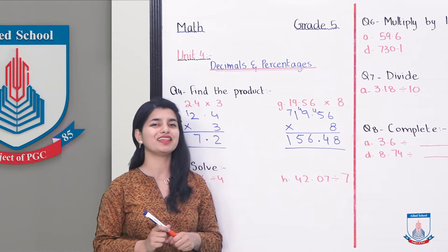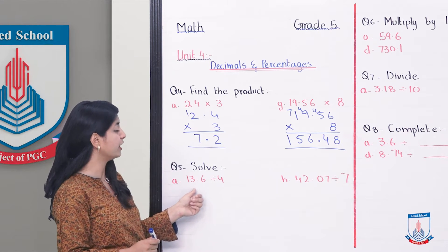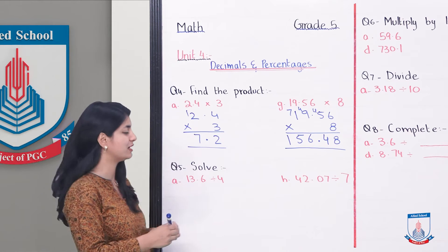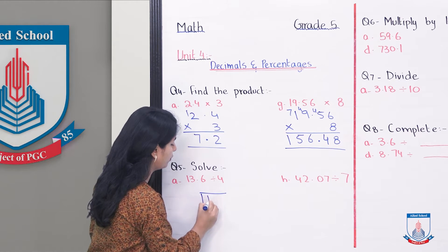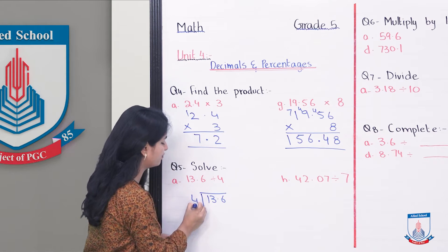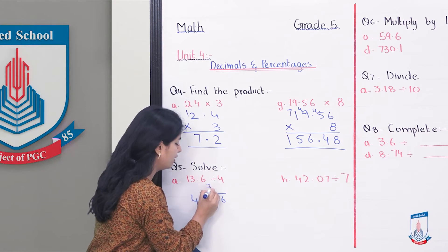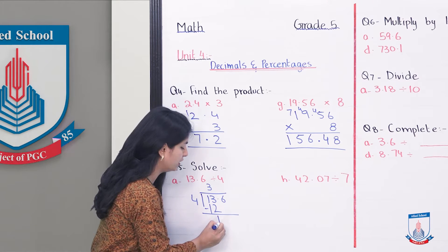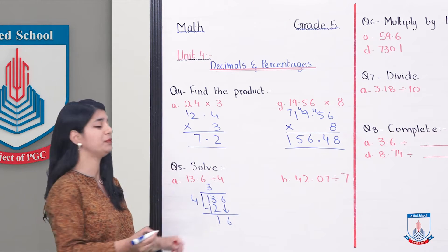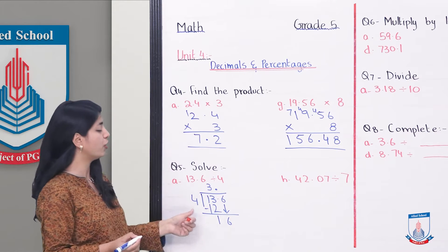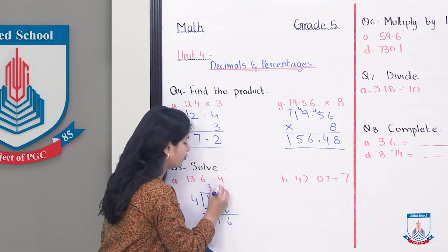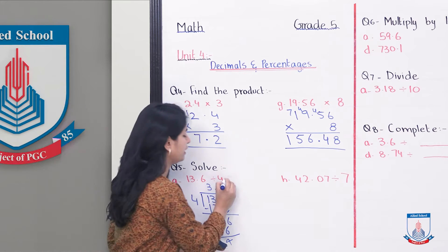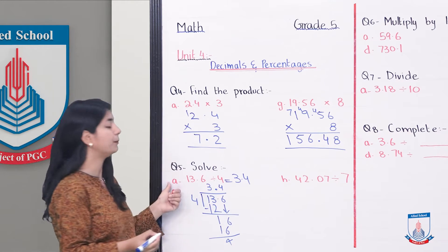Now, let's see question number 5 — Solve. Over here, you have to divide. When you divide a decimal with whole numbers, you can divide it in the regular way. For example, 3.6 divided by 4. 4 threes are 12, so we have 12 here. Minus: 13 minus 12 is 1. Bring down 6. And because we have a decimal place, we will put a decimal here. So, 4 fours are 16. Your answer is 3.4 for part A.